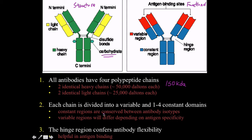They have a constant region, which is conserved between antibodies of the same isotype — that just means the classifications we have of them. There's also a variable region which differs depending on antigen specificity. The variable region is the site where the bacteria or viral piece binds, while the constant region is structurally conserved.